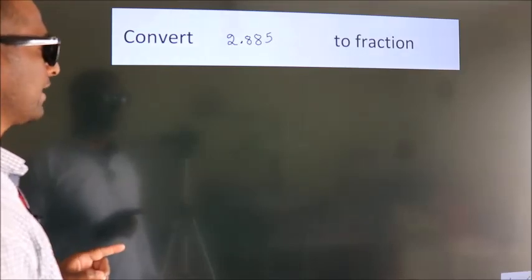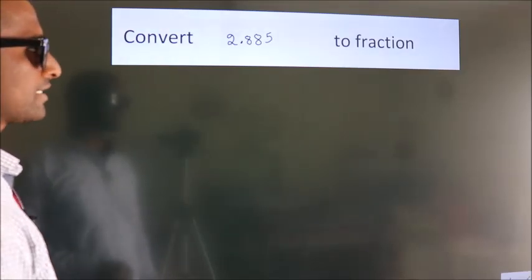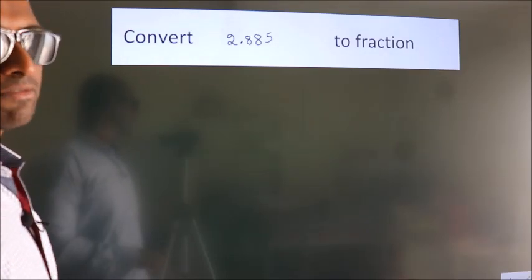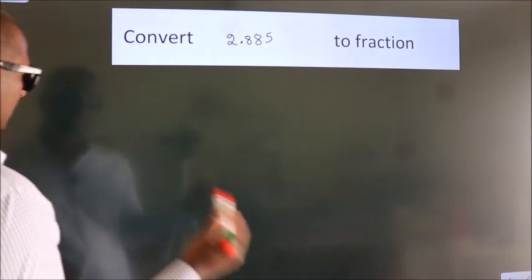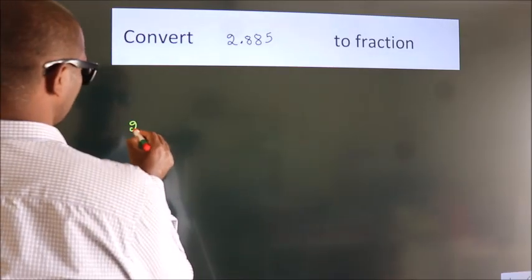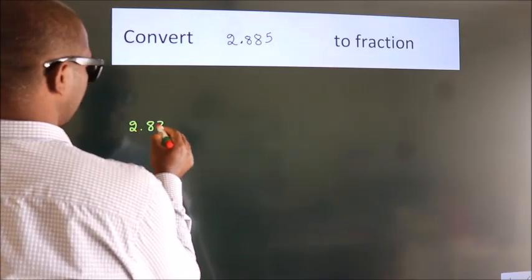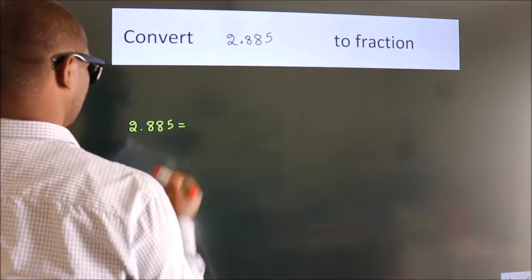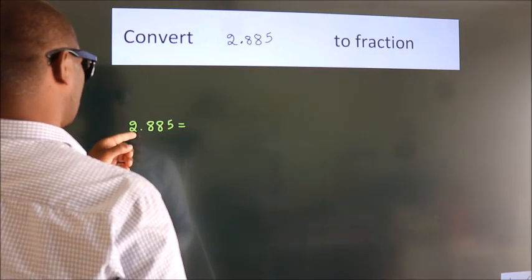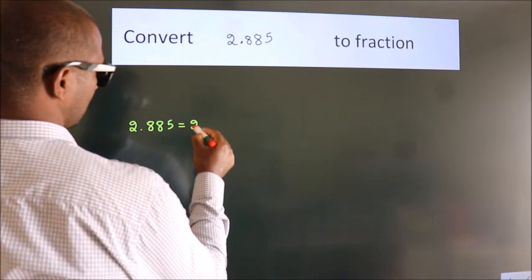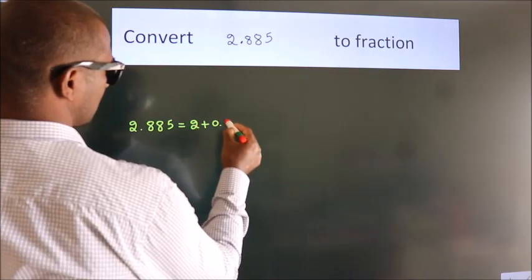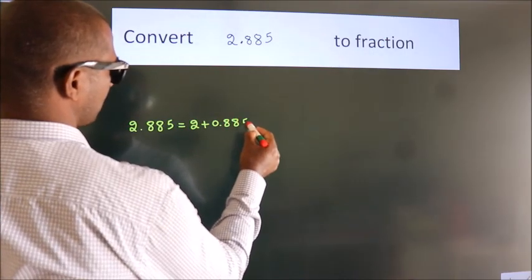Convert 2.885 to fraction. How do we convert this? Given is 2.885, first we should break this into 2 plus 0.885.